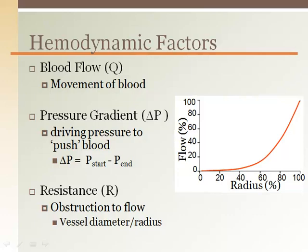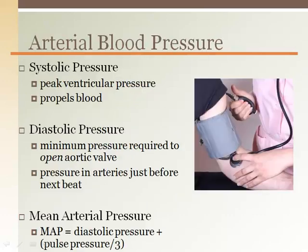You must have a pressure gradient — high pressure to low pressure — for flow to occur. Resistance is the obstruction to flow, where vessel diameter plays the greatest role. The arterial pressure is highest at the proximal aorta, receiving the peak ejection pressure from the heart.